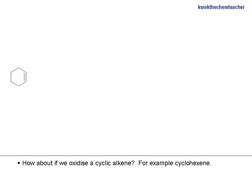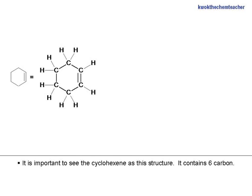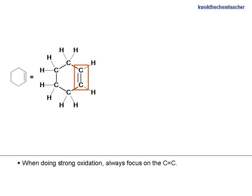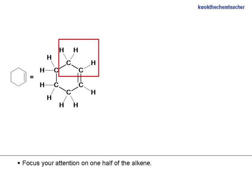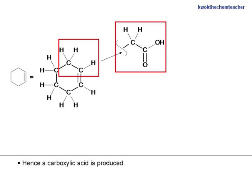How about if we oxidize a cyclic alkene? For example, cyclohexene. It is important to see cyclohexene as this structure — it contains 6 carbons. When doing strong oxidation, always focus on the carbon-carbon double bond. Focus your attention on one half of the alkene. It is linked to a carbon, which means an alkyl group, and a hydrogen. Hence, a carboxylic acid is produced.